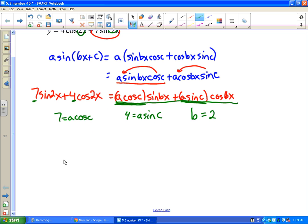Now we are ready to try to find a. And here's the way I think is actually easier: let's solve this for cosine c. So to do that I would divide both sides by a and get cosine c equals 7 over a. And let's do the same thing on this - I would get 4 over a equals sine c. And let's think about a right triangle.